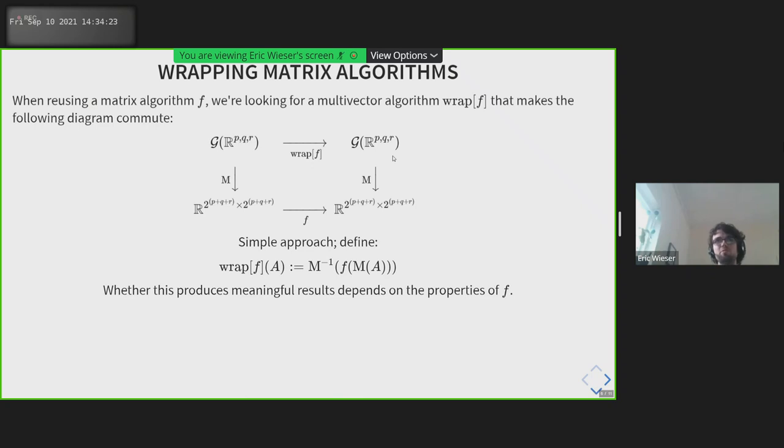This doesn't always produce meaningful results, of course. It depends on exactly what F is and whether it has desirable properties. But as an example of this being used today, this was one of the first inverse algorithms that the Clifford Python package used, which is simply to convert to a matrix, do the inverse of that matrix, and then pull out the first column.